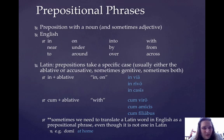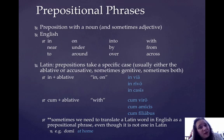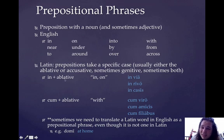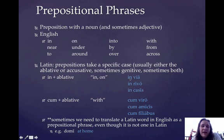We're only going to talk about two prepositions that take the ablative case, and they're in your vocab for this week. In takes the ablative — actually, it's one of those that can also take the accusative, but we're not going to talk about that today. In plus the ablative means 'in' or 'on.' So in via means 'on the road,' in rivo means 'in the river,' and in casis means 'in the houses.'